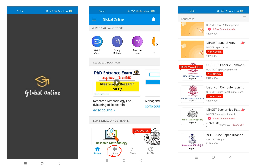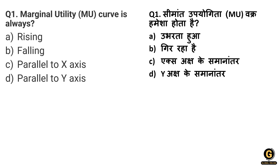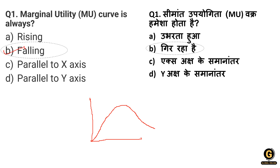This is our first question: the Marginal Utility (MU) curve is always — rising, falling, parallel to the x-axis, or parallel to the y-axis? We have to remember how the marginal utility curve looks. As we learned before, it is falling. So the correct answer is option B — falling.